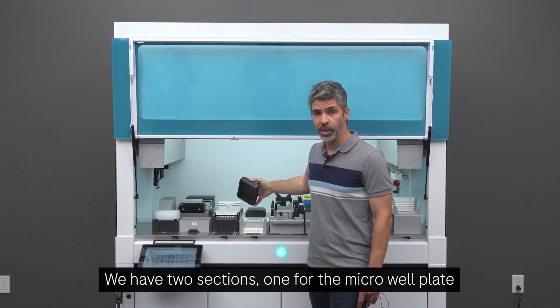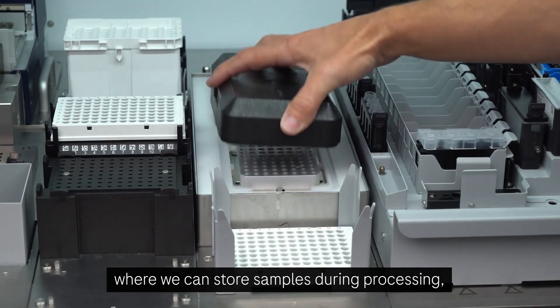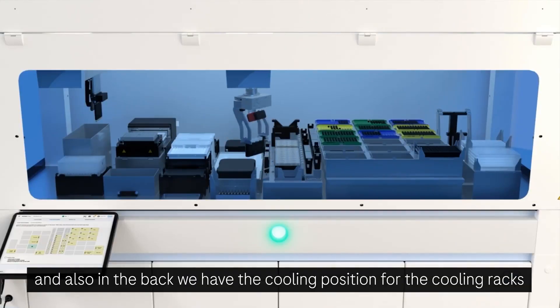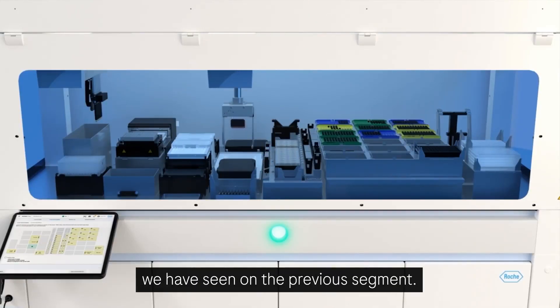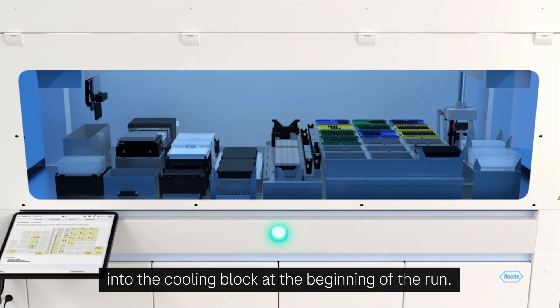One for the microwell plate where we can store samples during processing. And also in the back, we have the cooling position for the cooling racks we have seen in the previous segment. So the instrument will transfer those racks automatically into the cooling block at the beginning of the run.